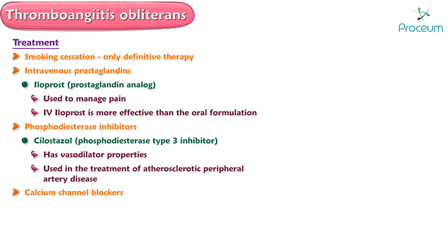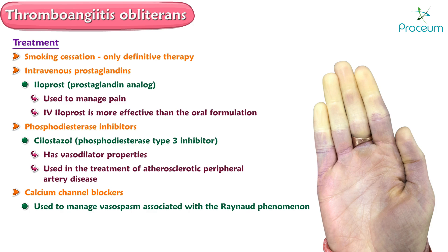Calcium channel blockers are frequently used to manage vasospasm associated with Raynaud's phenomenon. When significant vasospasm is present in patients with thromboangiitis obliterans, calcium channel blocking agents such as nifedipine, nicardipine, and amlodipine may be similarly used.